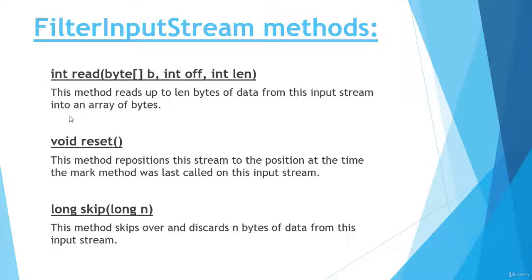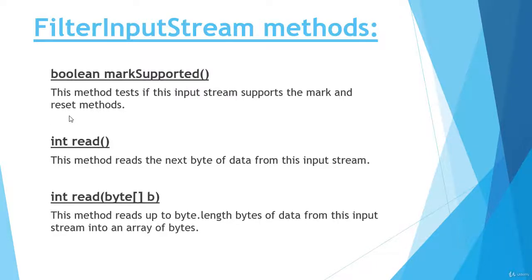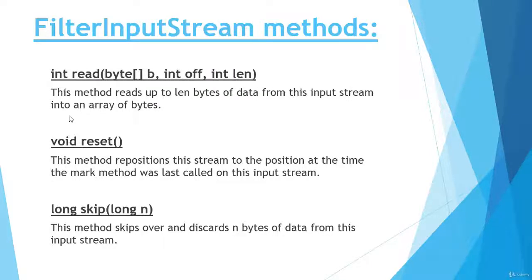Next we have the reset() method. This method repositions the stream to the position at the time the mark() method was last called on the InputStream. The mark() method marks the current position, and this reset() method repositions the stream back to that marked position. Next we have the skip() method. This method skips over and discards n bytes of data from this InputStream. Whenever we want to skip some bytes of data from a file we use this skip() method, which we have also discussed in previous videos.